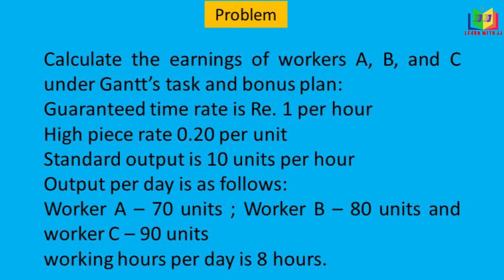Now let's solve a problem: calculate the earnings of workers A, B, and C under Gantt's Task and Bonus Plan. The guarantee time rate is ₹1 per hour, the high piece rate is 20 paise per unit, and the standard output is 10 units per hour. Output per day: Worker A — 70 units, Worker B — 80 units, Worker C — 90 units. Working hours per day is 8 hours.